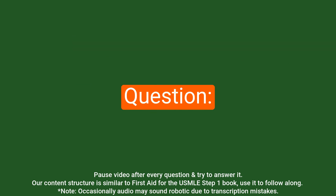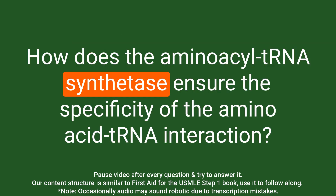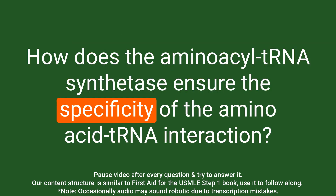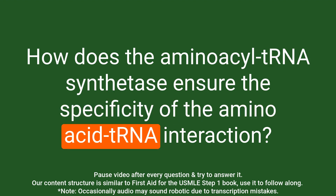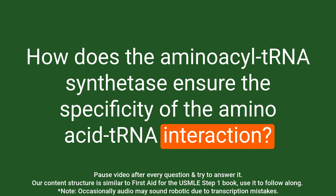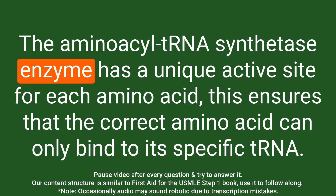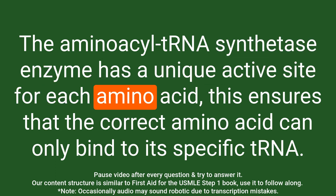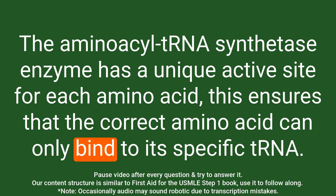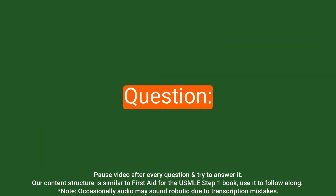Question: How does the aminoacyl-tRNA synthetase ensure the specificity of the amino acid-tRNA interaction? Answer: The aminoacyl-tRNA synthetase enzyme has a unique active site for each amino acid, ensuring that the correct amino acid can only bind to its specific tRNA.